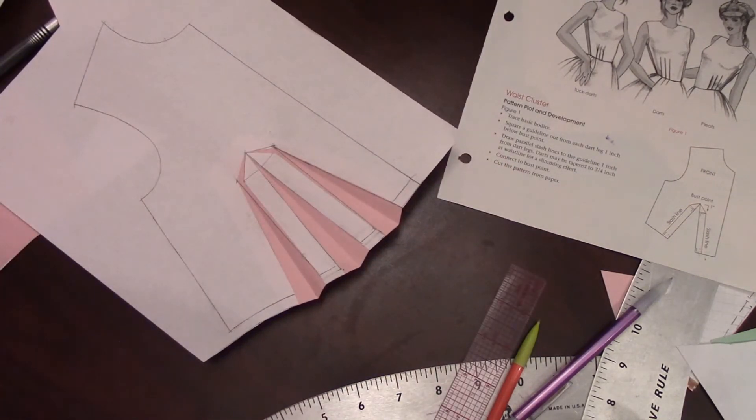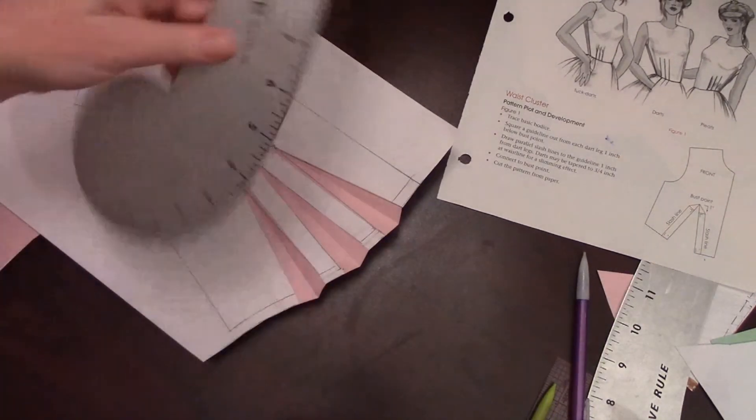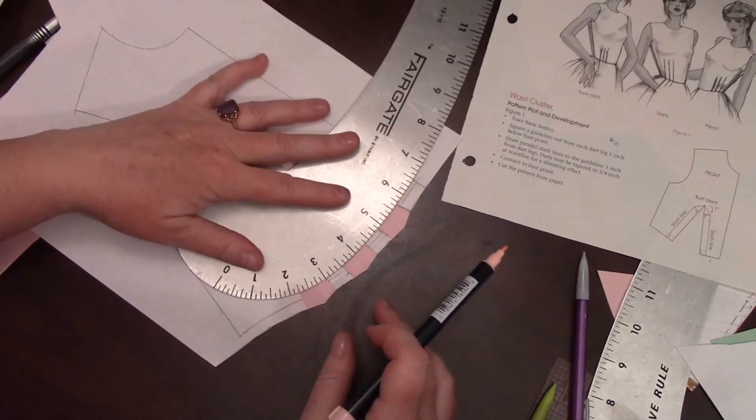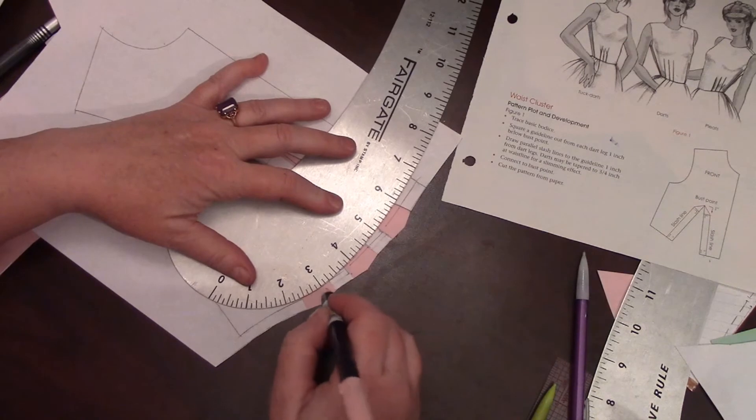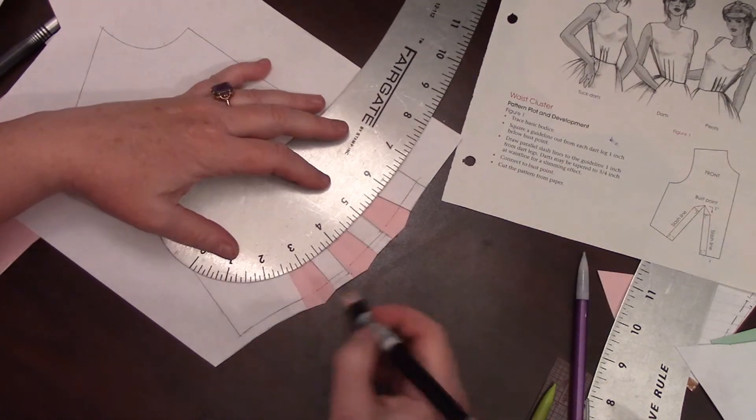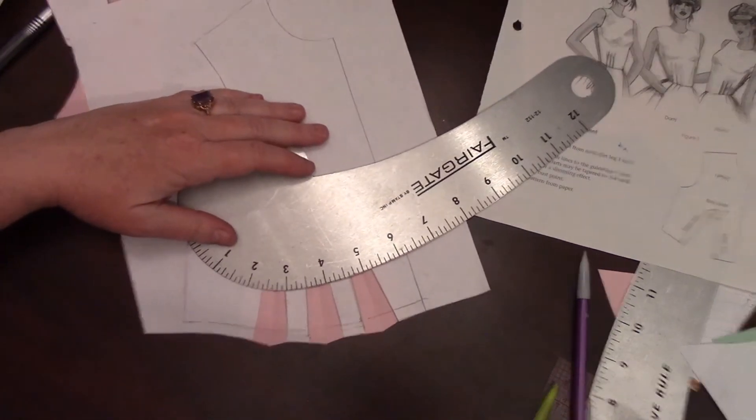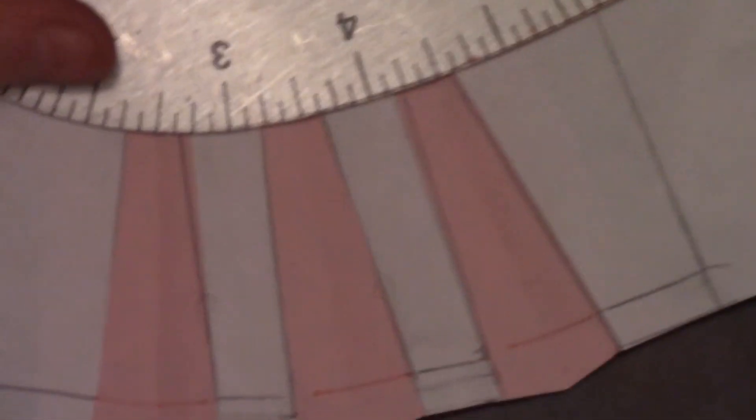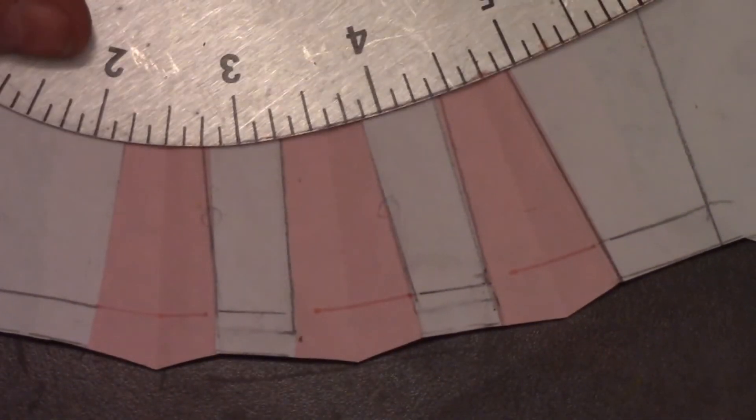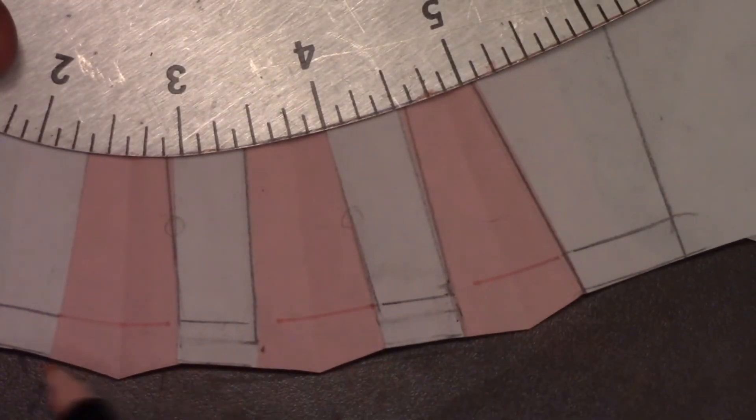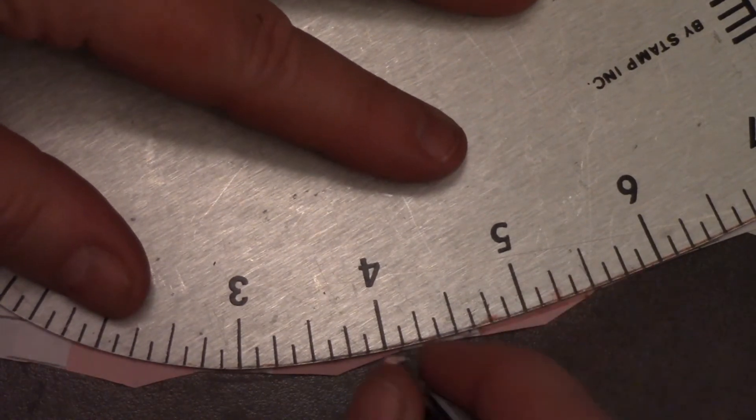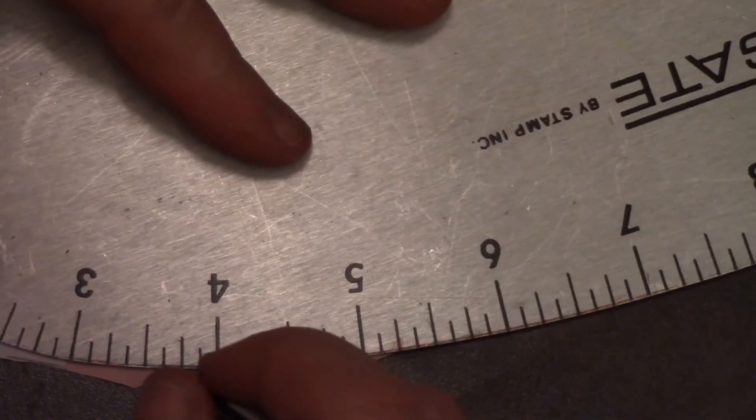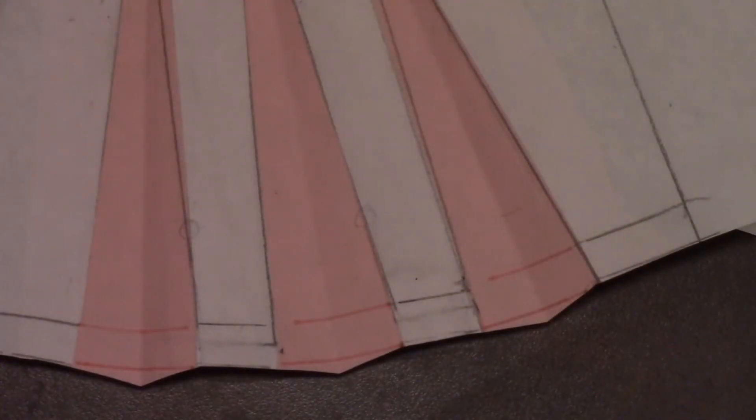But for gathers, I will put a pink line on for optional gathers. So that's where I would blend it off if it were gathers, where that pink is, which means I would cut that off and trim it too. So that would be the difference between the gathers and the tucks.